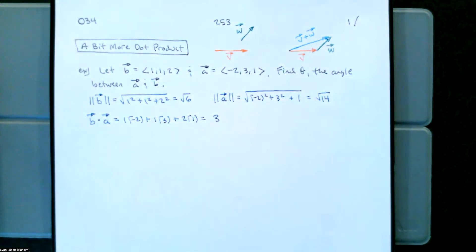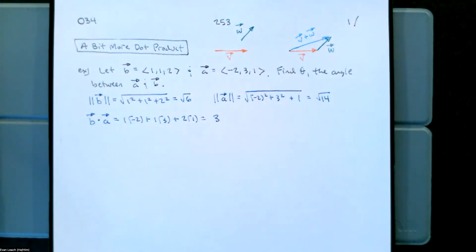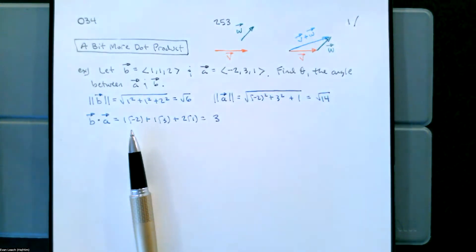Now we have enough information to find the angle between vector B and A. We found B dot A instead of A dot B, and we can see it's going to be commutative because it's just based on regular addition and multiplication. We're finding the products of the components; the components are real numbers, and multiplication of real numbers is commutative, so the dot product is also commutative.